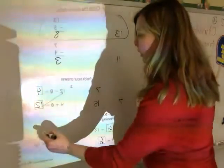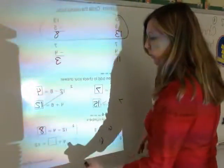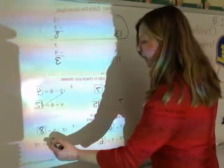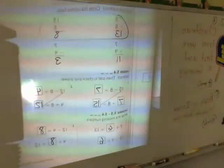12 minus 4 is 8. 4 plus what is 12? Well, since those are related facts, this is going to be 8 as well. Let's look at the back.